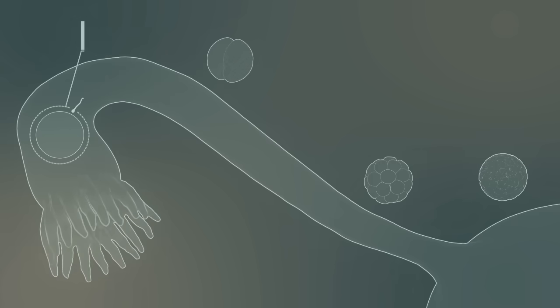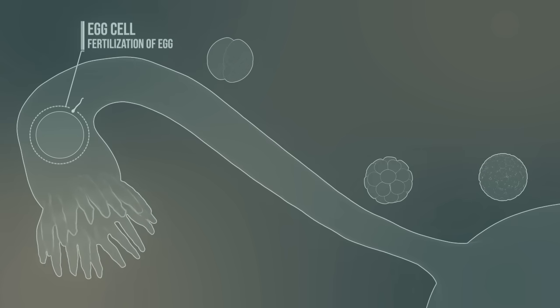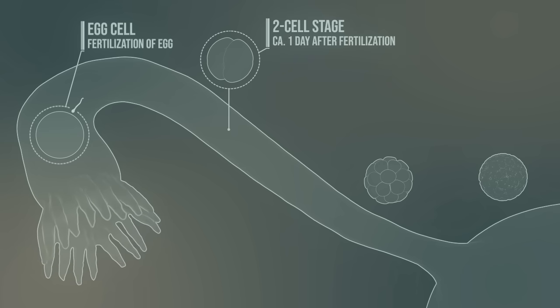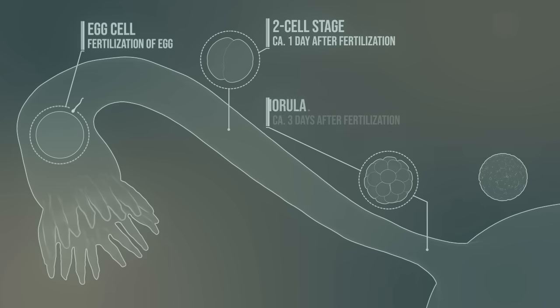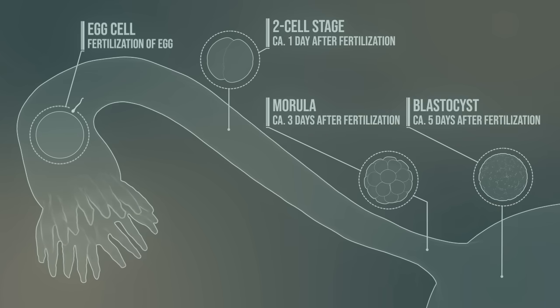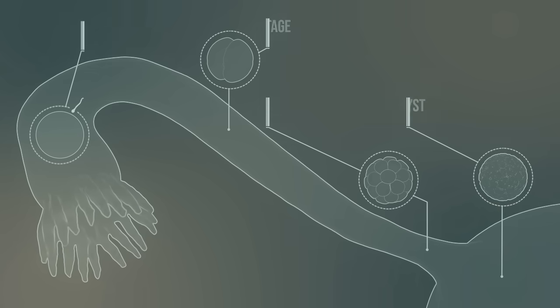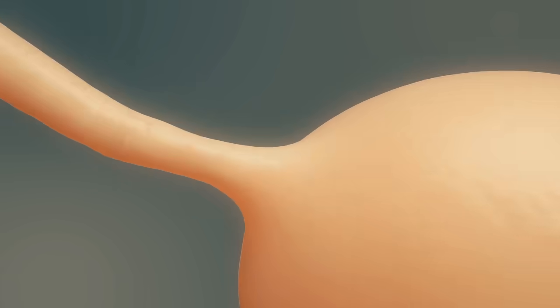Let's see the individual stages in the fallopian tube. Fertilization occurs at the end of the tube. The first cell division takes place about a day after fertilization. Eventually, further cell divisions happen forming the morula. And in the uterus, the blastocyst is created.